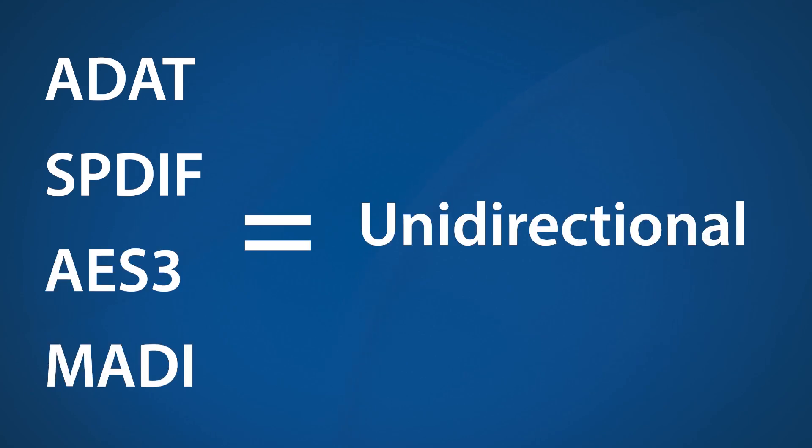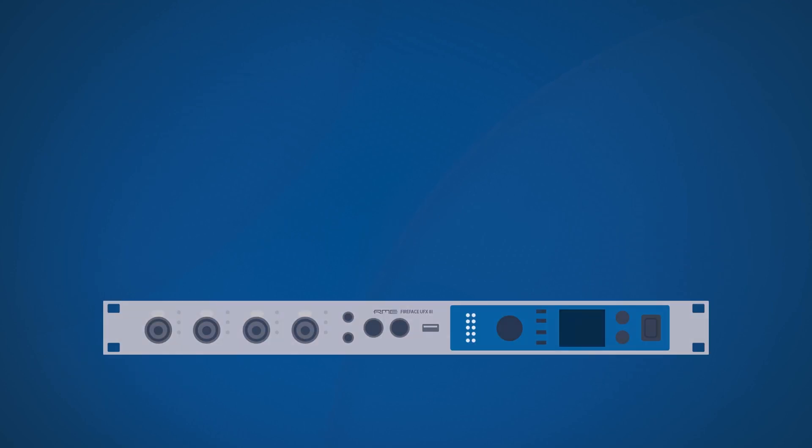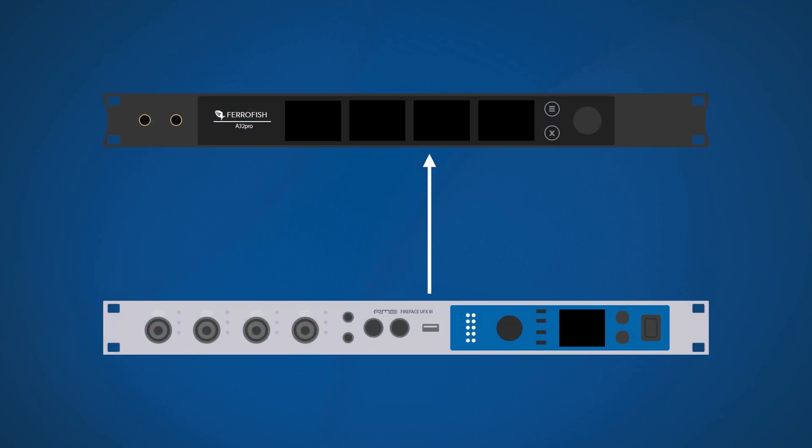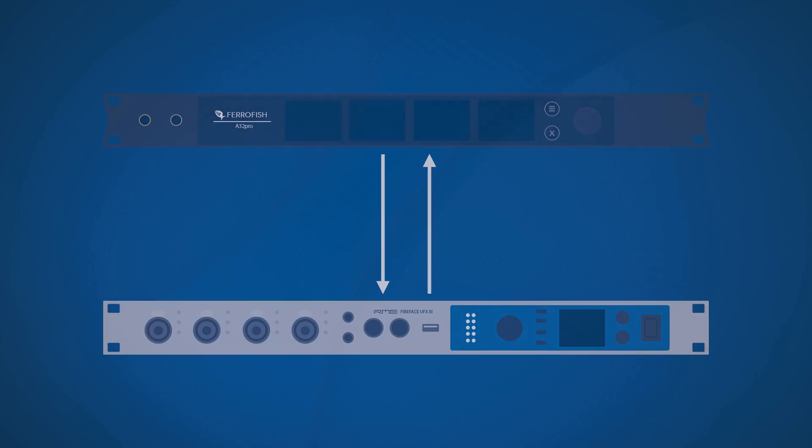Like ADAT, SPDIF and AES-3, MADI signals are unidirectional — you send them from the output of one device to the input of another and vice versa. This is different from AOIP-based formats like Dante, Milan and AVB, which can simultaneously send and receive signals via a single Ethernet cable as well as from multiple sources.